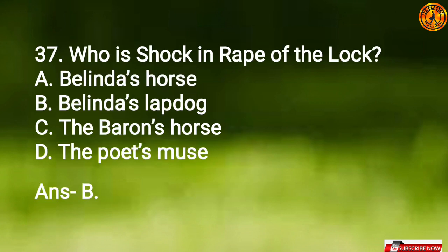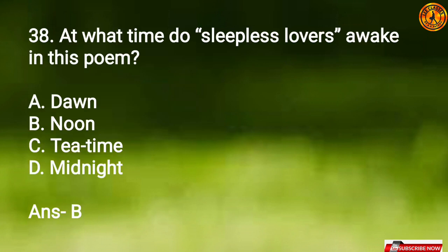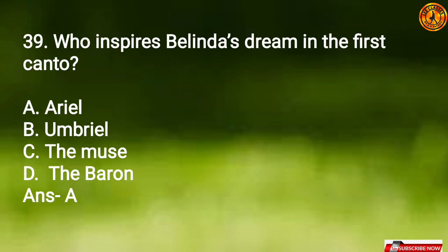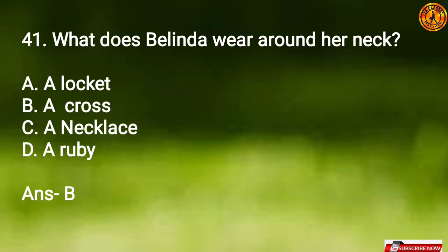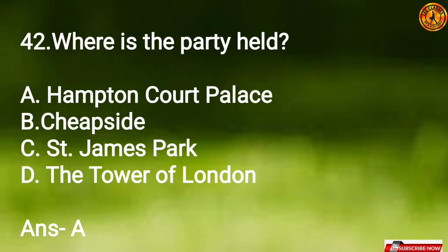Question 37: Who is 'Shock' in 'Rape of the Lock'? Option B, Belinda's lapdog. Question 38: At what time do sleepless lovers awake in this poem? Option B, noon. Question 39: Who inspires Belinda's dream in the first canto? Option A, Ariel. Question 40: To what are Belinda's eyes repeatedly compared? Option A, the sun. Question 41: What does Belinda wear around her neck? Option B, a cross.